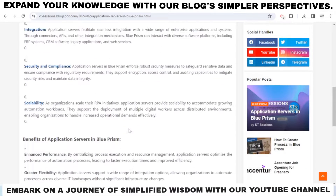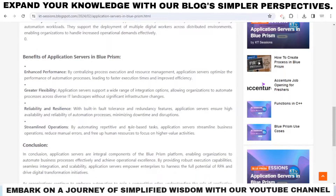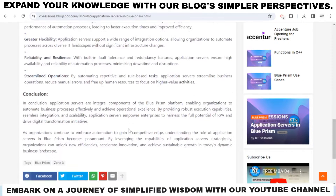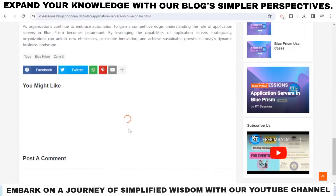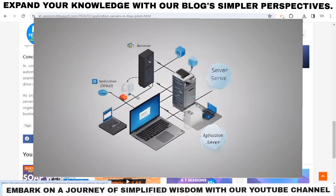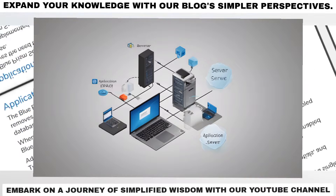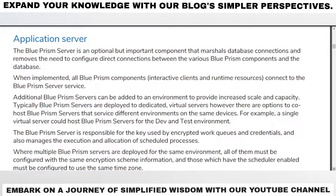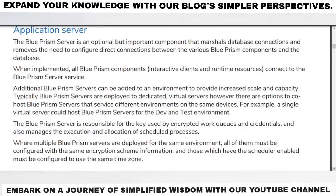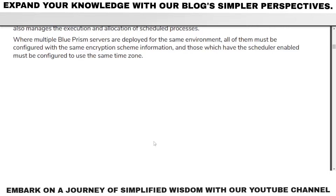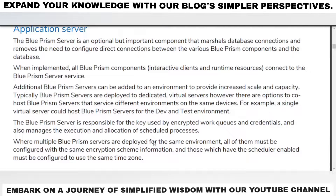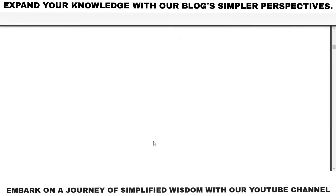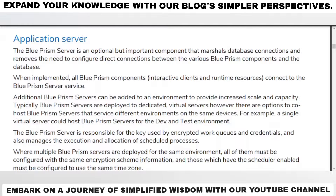In Blue Prism, the application server is not a standalone term. Blue Prism typically interacts with various application servers or systems where automated processes are executed. The Blue Prism server is an optional but important component that marshals database connections and removes the need to configure direct connections between the various Blue Prism components and the database. When implemented, all Blue Prism components — interactive clients, components, and runtime resources — connect to the Blue Prism server service.